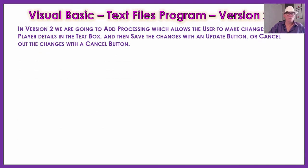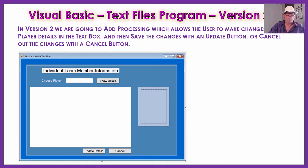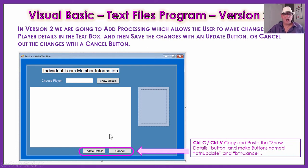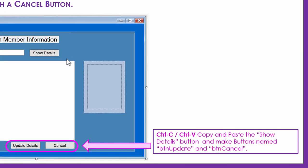Now version two is where we learn how to write files. We're going to add processing where the user can save changes — they can go in and edit that biographical information and change it. If they're looking at edits before committing to save and something's really wrong, they can click cancel, which will reverse out all of the changes. What we need to do on the form is just add two more buttons. Copy and paste the show details button twice, name one BTN update with text 'update details,' and the other BTN cancel.